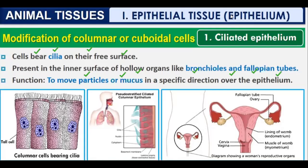Cilia also help move the egg (ovum) in the fallopian tubes. The function of ciliated epithelium is to move particles or mucus in a specific direction over the epithelium.